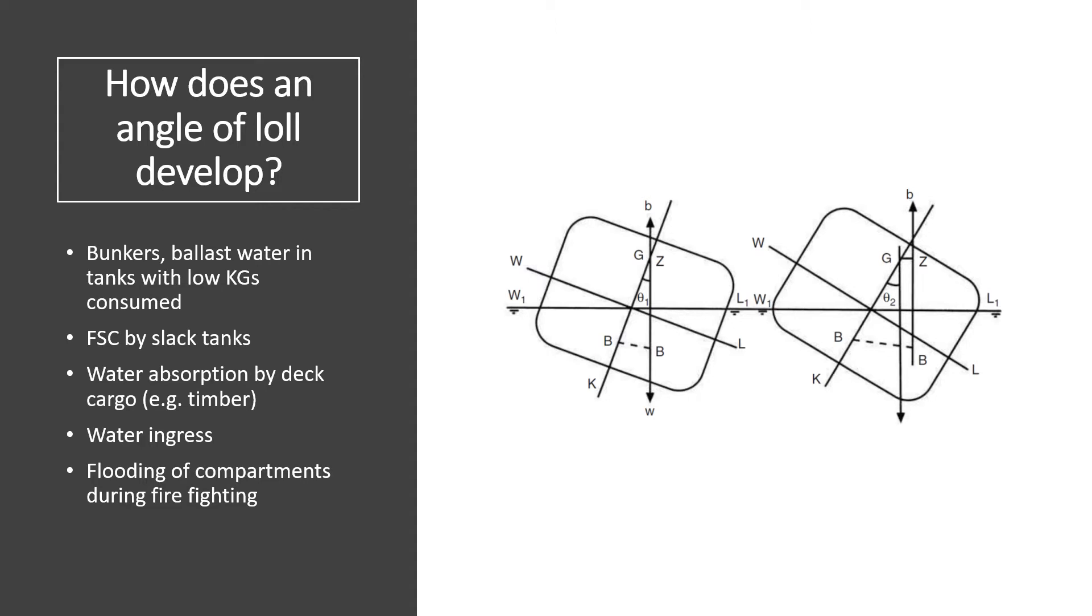How does the angle of loll develop? I've listed some reasons here on the left side of your screen. An angle of loll can develop mainly for many reasons. One reason could be consumption of fuel and water and introduction of free surface effects. If fuel and water are consumed from a lower level in the ship, it raises the center of gravity due to removal of weight from the lower part of the ship.